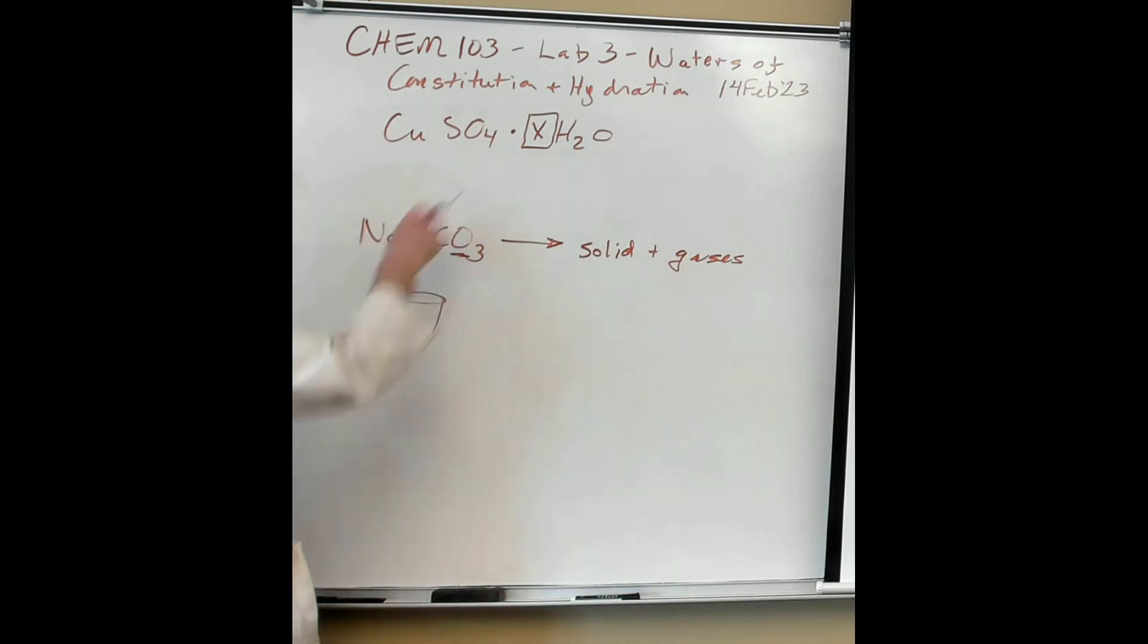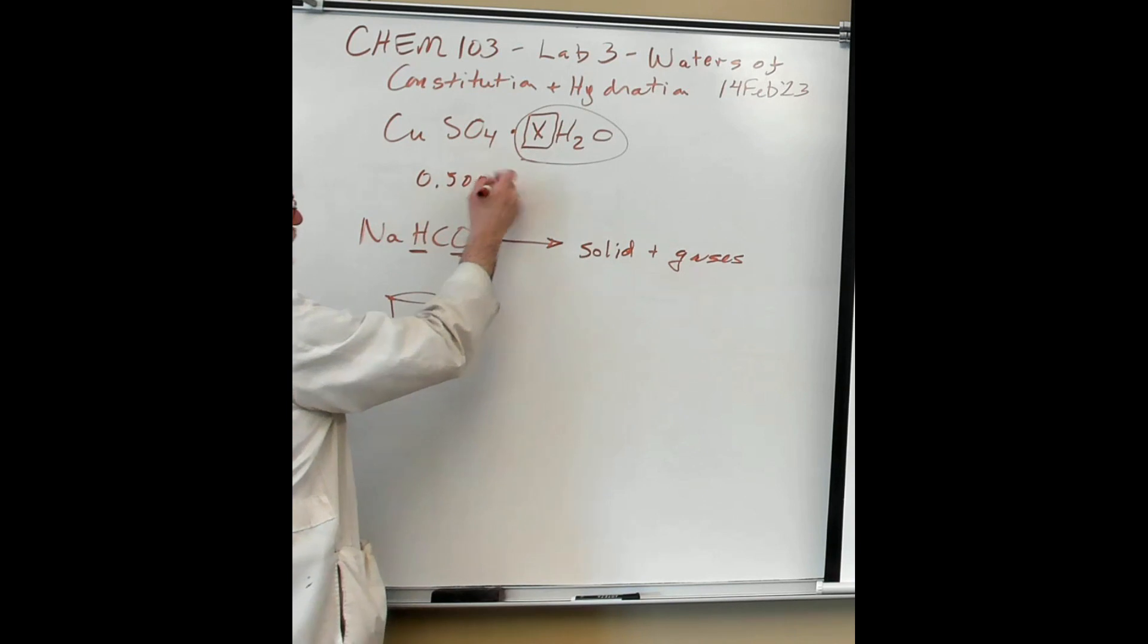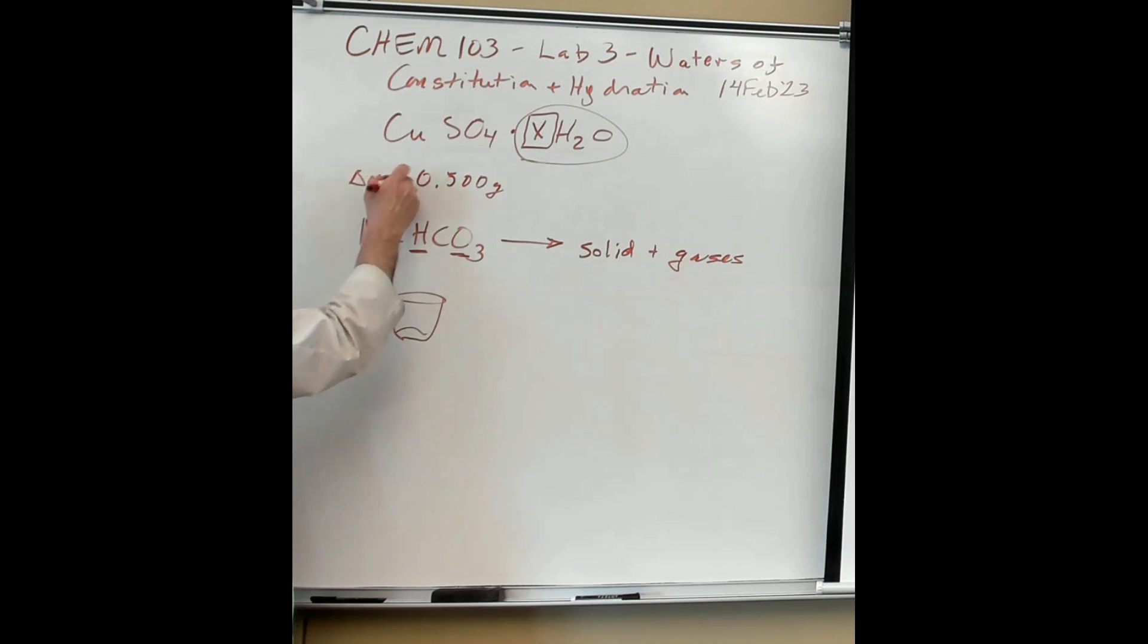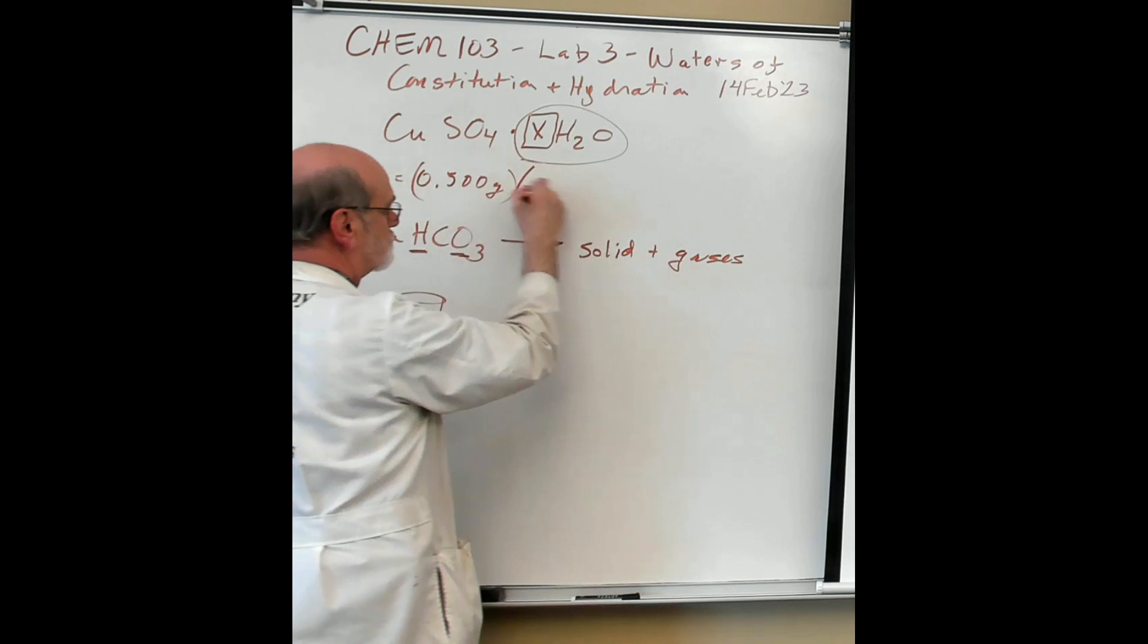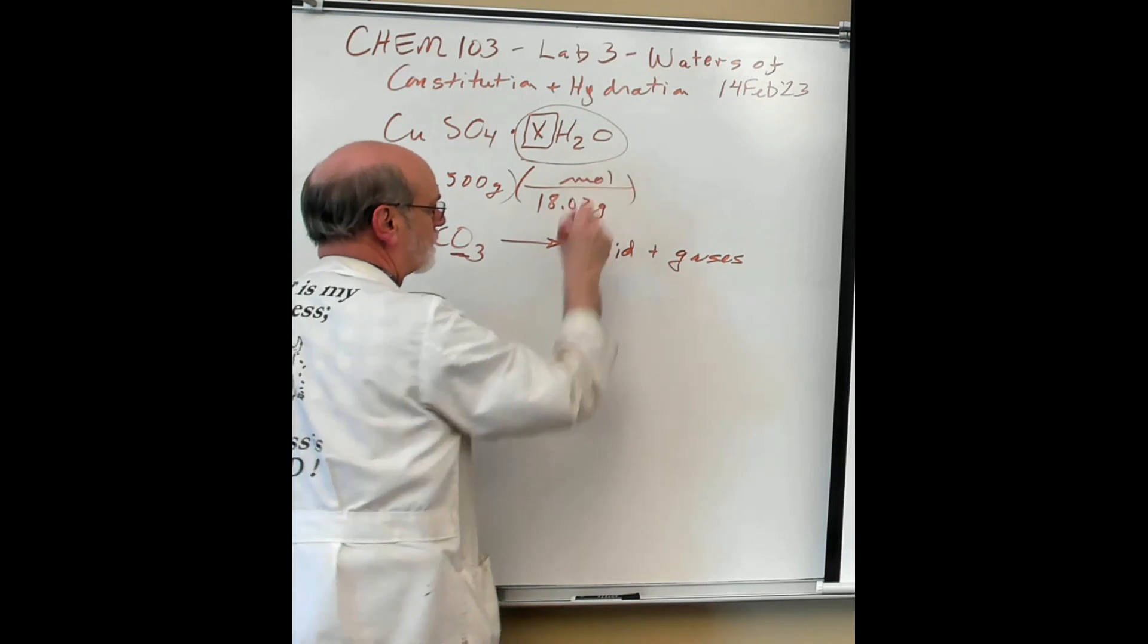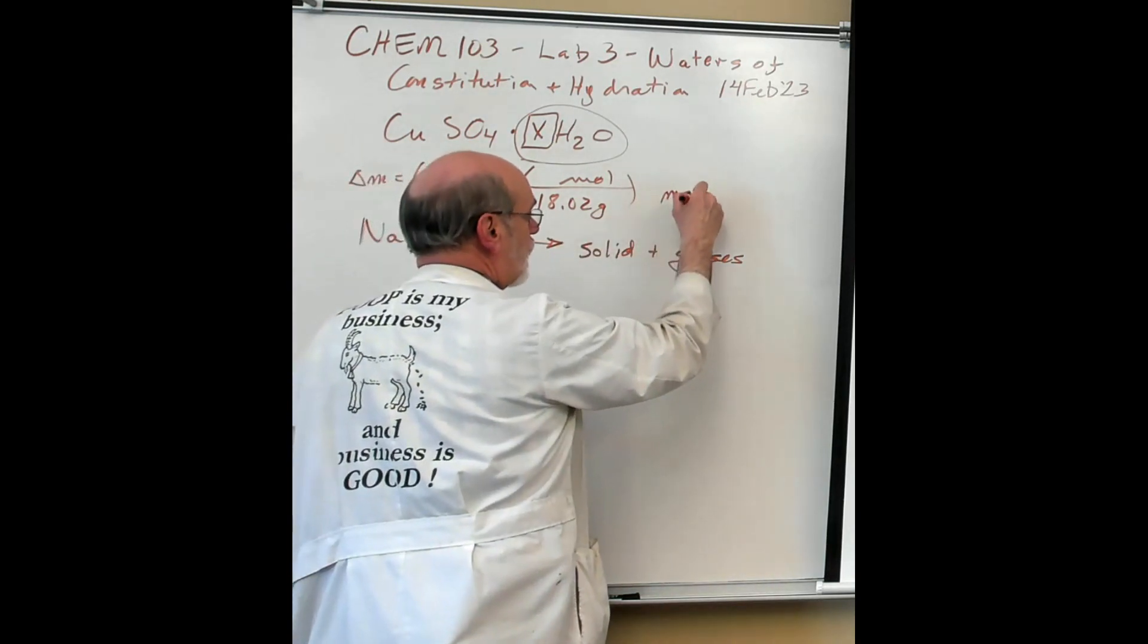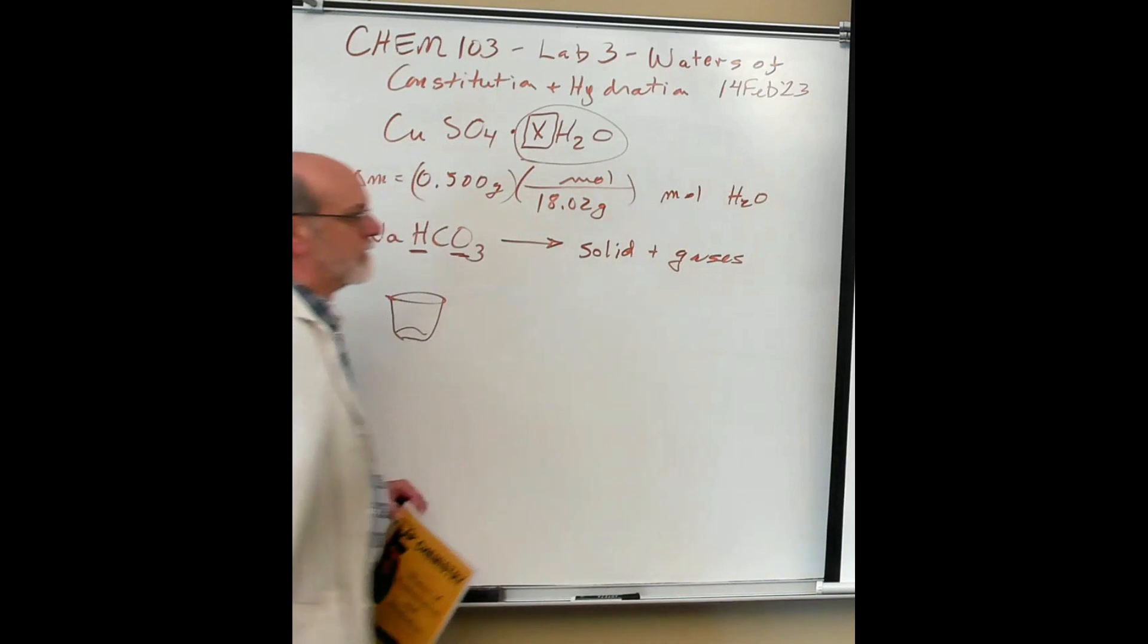For this one, it's easy. The difference in the weights is due to the loss of that water. So if you know the mass that you lost, I don't know, half a gram maybe? I'm just for argument's sake. If it's half a gram of loss, a change in mass is a half a gram, it's due to water. So how much water is that? 18.02 grams per mole. Molar mass of water. So we know how many moles of water.